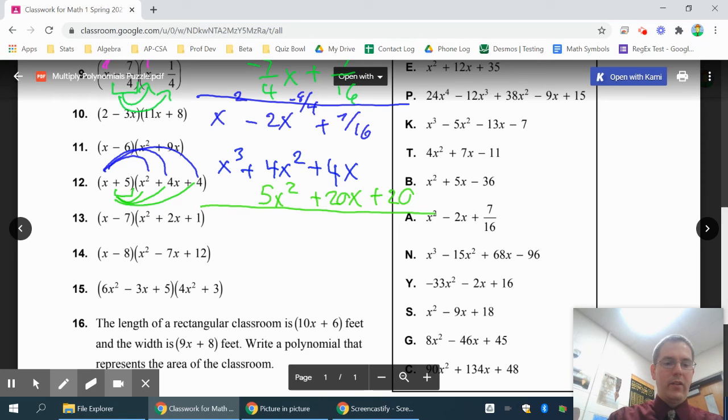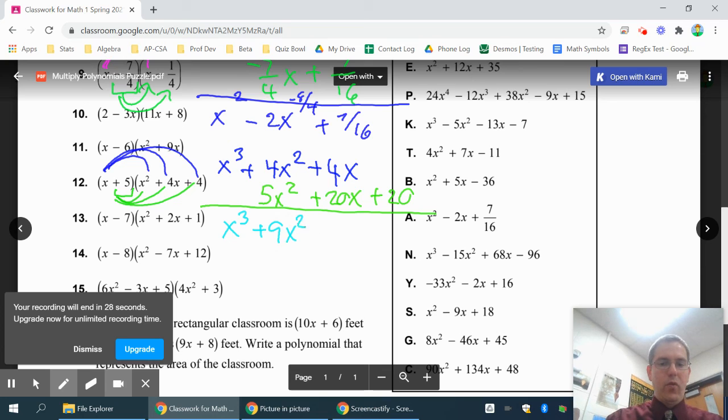Then just add your like terms together, so your final answer becomes x to the third. 4 plus 5 is 9x squared. 4 plus 20 is 24x. And that gives you a plus 20 on the end. And that is what you have.